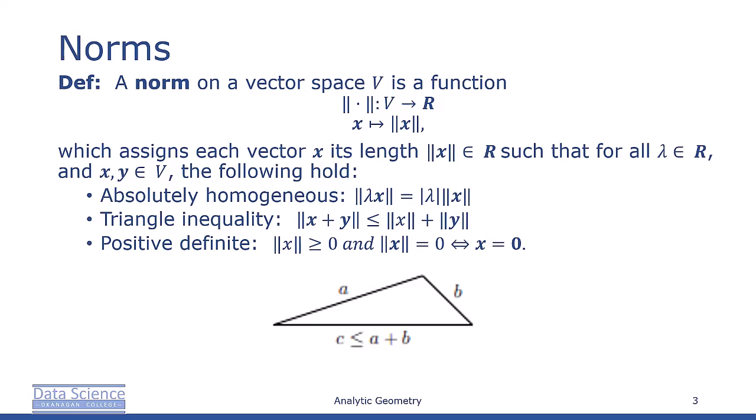A norm on a vector space V is a function that maps vectors to real numbers, which assigns to each vector x its length, norm of x, which is a real number, such that for every real number lambda and all vectors x and y, the following three properties hold. Absolute homogeneity: the norm of lambda x is equal to the absolute value of lambda times the norm of x.